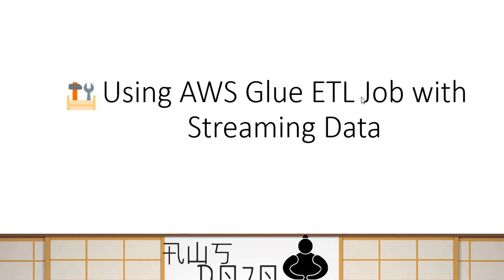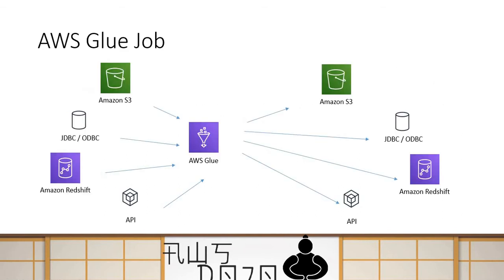If I look at the traditional way Glue used to work, you were able to create an ETL job in Glue which can source data from an S3 bucket or any kind of JDBC/ODBC sources like relational databases — SQL Server, MySQL, Postgres, Oracle — and even from Redshift. You can also call APIs because you can write your job inside Glue using a Python shell script. It was able to source data from these sources and also upload or update data to similar destinations like S3 buckets, databases, or APIs. This has been the job of Glue ETL for quite some time.